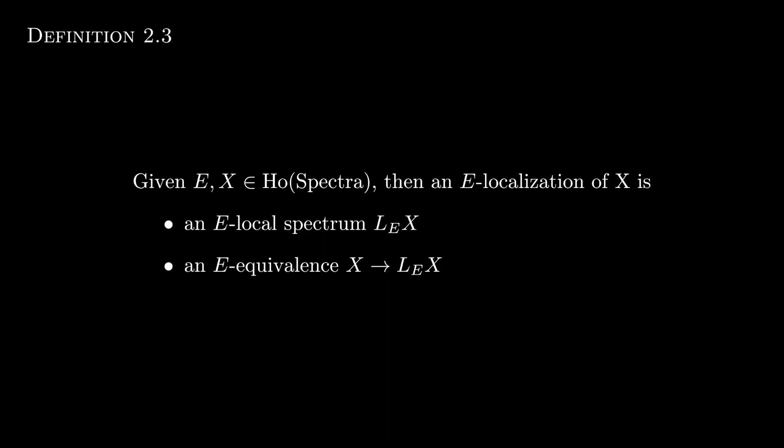Like, in that case, we found out that for any spectra, we could construct an omega-spectrum that was stably equivalent to the original. This reminds me a lot of that. Next time, furthering this similarity, we will show that E-localizations always exist.